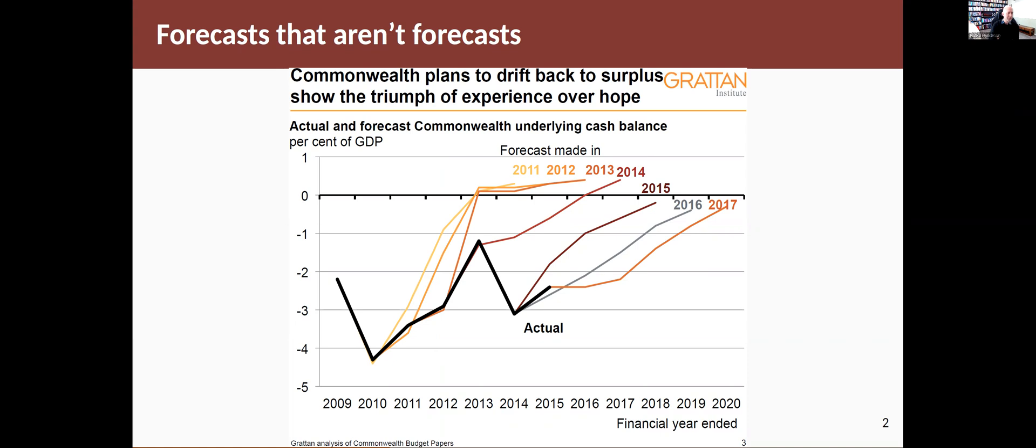You can see the actual numbers and the forecast numbers made in seven consecutive years, and every year the forecast is way higher than what actually happens. I call these hope casts rather than forecasts. They're published for political reasons rather than because it's a genuine attempt to predict what's going to happen in the future. So we're not talking about that. We're talking about trying to predict the future accurately.